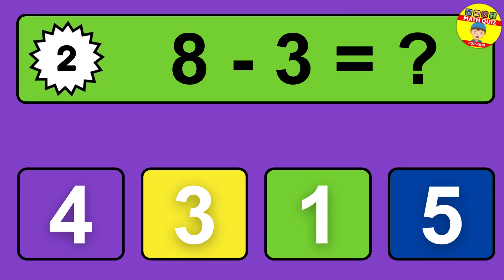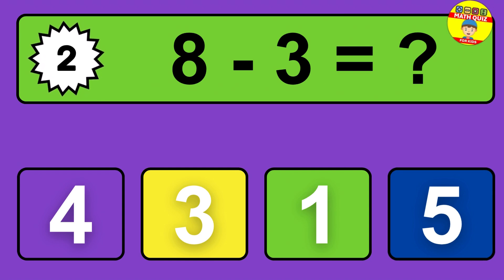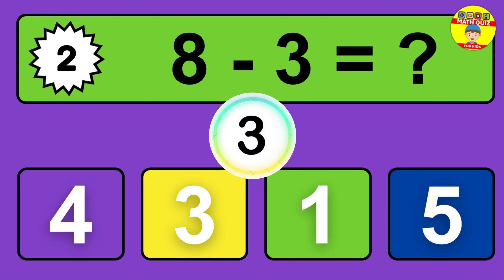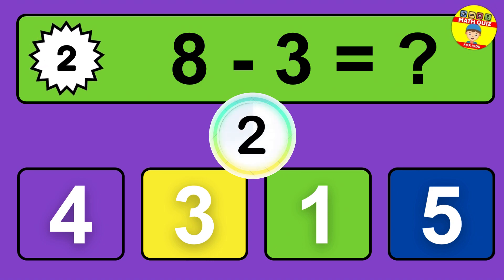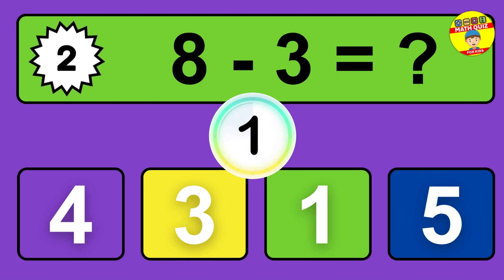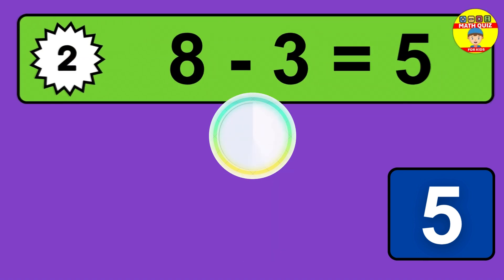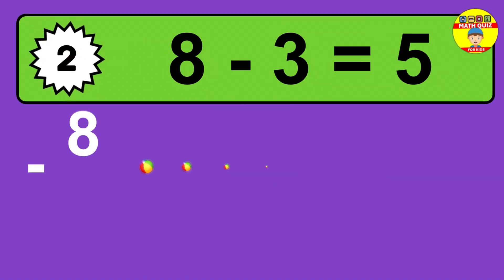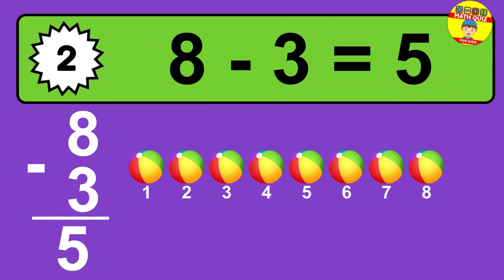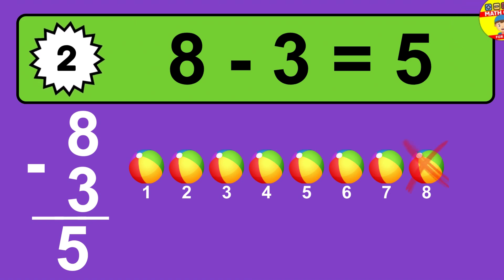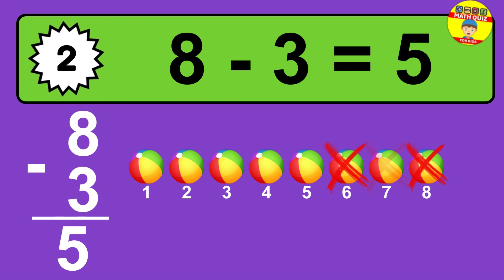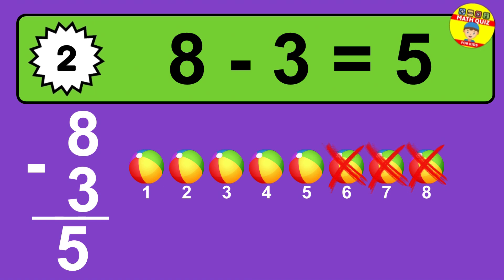Question two: seven minus four equals what? So the answer is seven minus four is three. Let's count it — one, two, three.